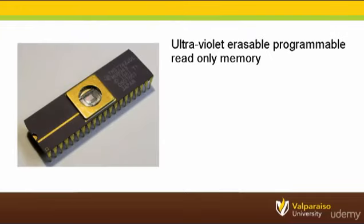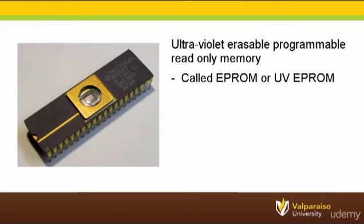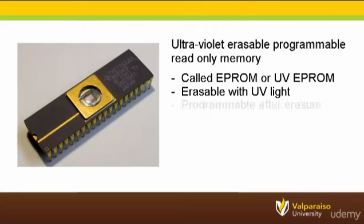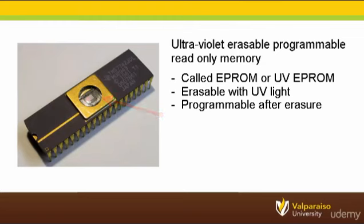The first major improvement on mask ROM program memories was the ultraviolet erasable programmable read-only memory, also known as UV EEPROM or simply EEPROM. EEPROM memories can be erased by exposure to strong ultraviolet light, typically for 10 minutes or longer, and then can be reprogrammed. EEPROM chip ceramic packages can be identified by the prominent quartz window, which allows the UV light to enter. After programming, the window is typically covered with an opaque sticker or label to prevent accidental erasure.